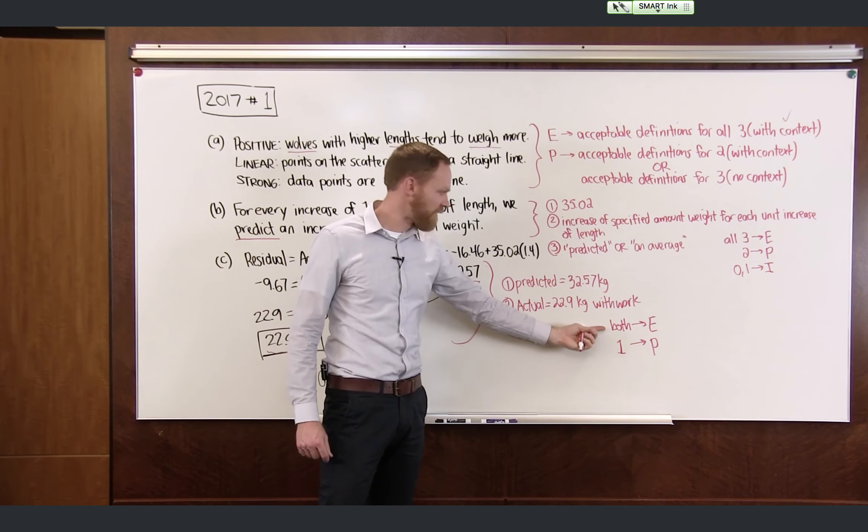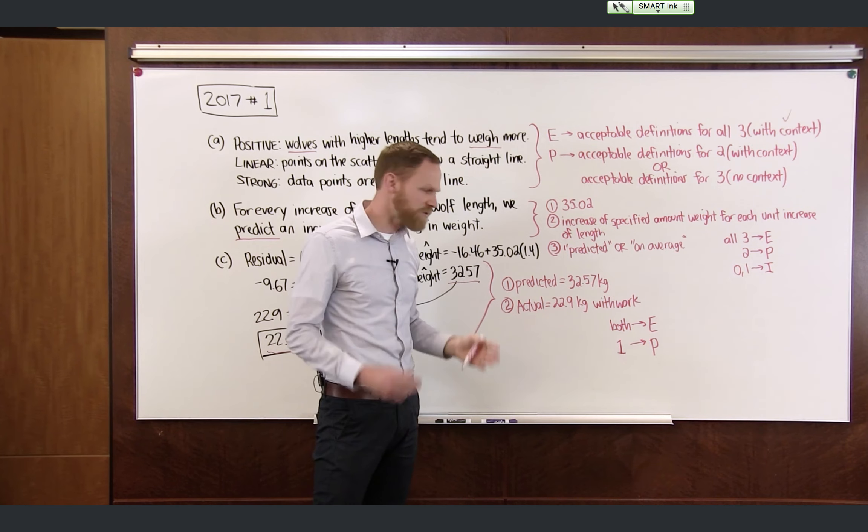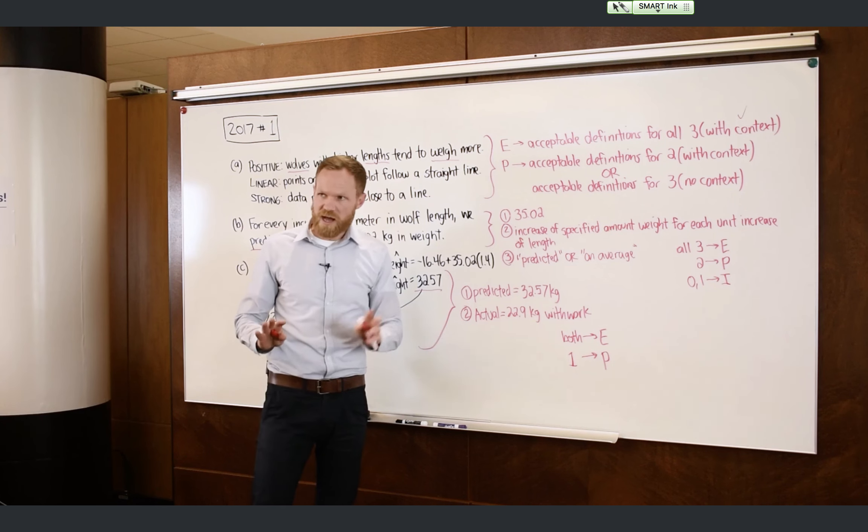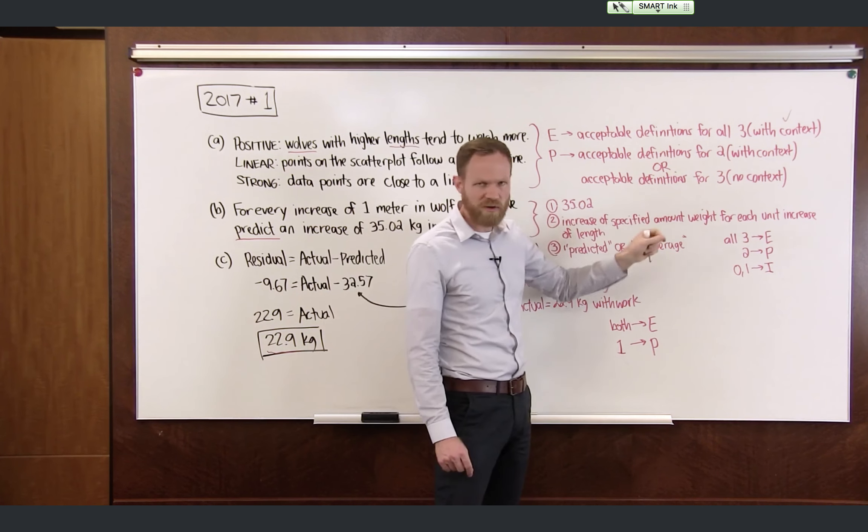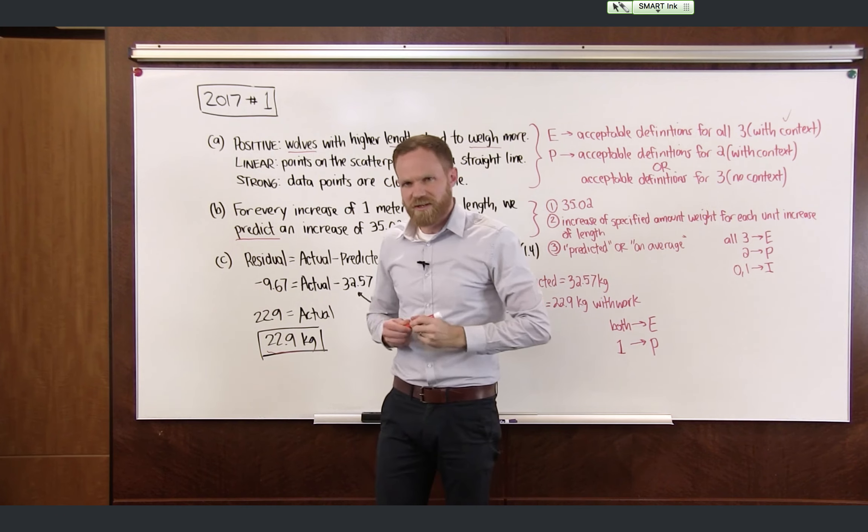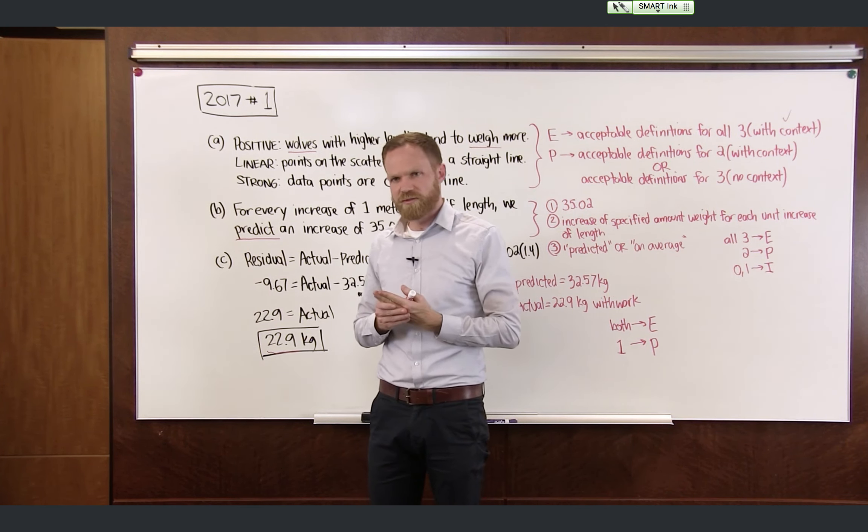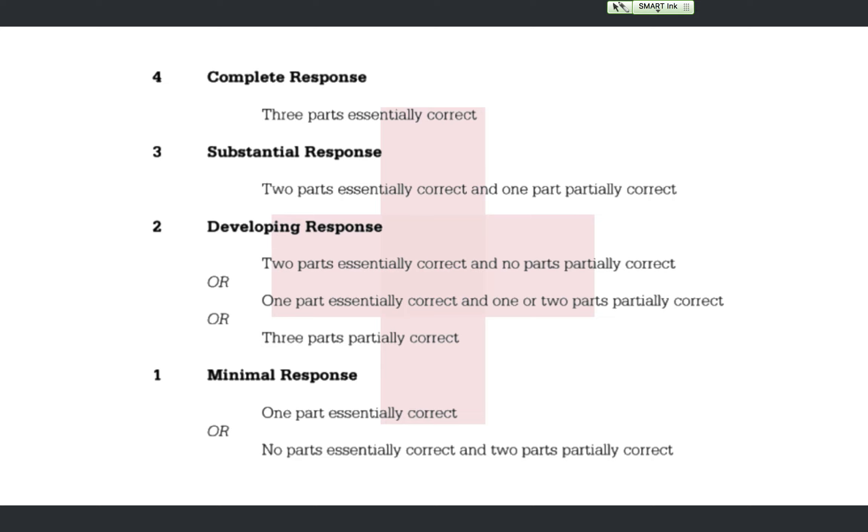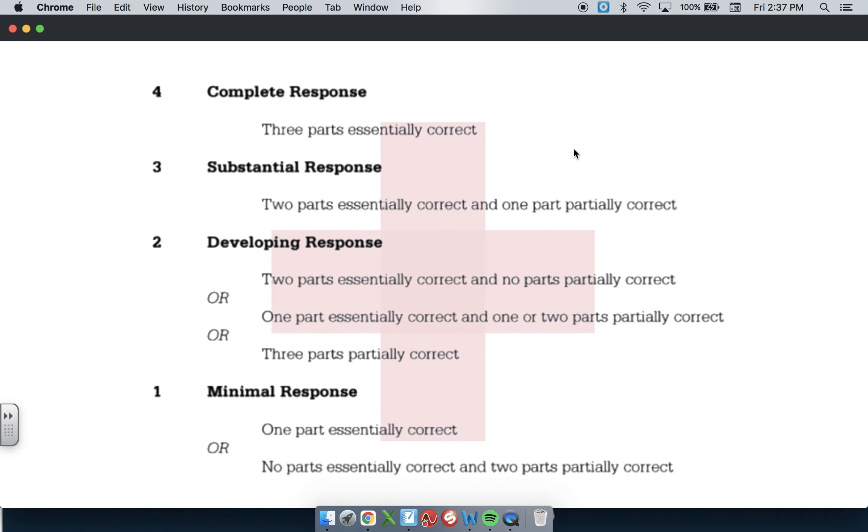Now, in order to get full credit on that part, you have to have both components one and two. If you only have one of those components, give yourself a P partial credit. So now that you've looked at all three parts and you have either E, P or I for each one of those three parts, here's how you turn it into a score on the AP exam out of four points. For a four, you have to have all three parts essentially correct. For a three, you have to have two parts essentially correct and one part partially correct. For a two, you have two parts essentially correct and no parts partially correct. Or one part essentially correct and one or two parts partially correct. Or partial credit on all three. And for a one, you have one part essentially correct. Or you have no parts essentially correct and two parts partially correct. Anything less than that would be scored as a zero.